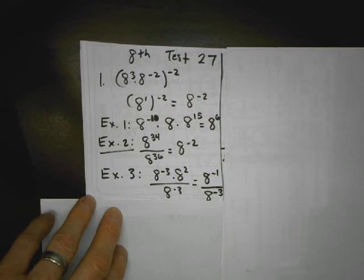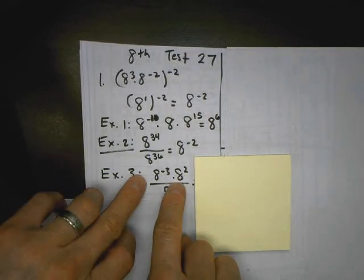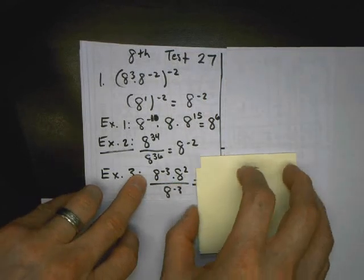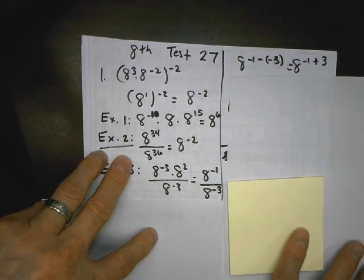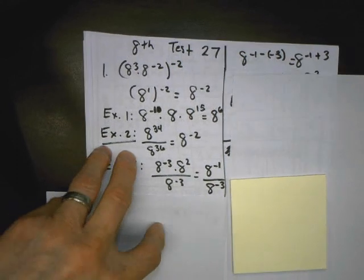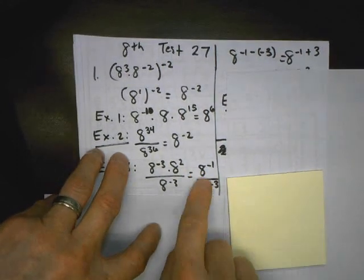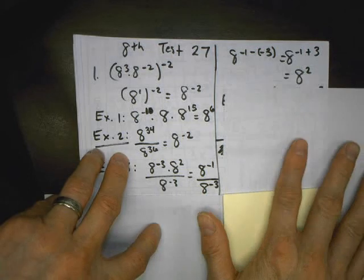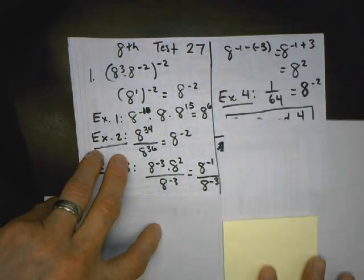For example 3, it's a mixture of those two. First thing I want to do is the top. I'll go ahead and copy the base and add the exponents. And then from there, I will do what I did on the last one, which is to subtract the exponents. So I have negative 1 minus negative 3. And when I do the rule for subtraction, I actually get a positive 2, so that's not the same.